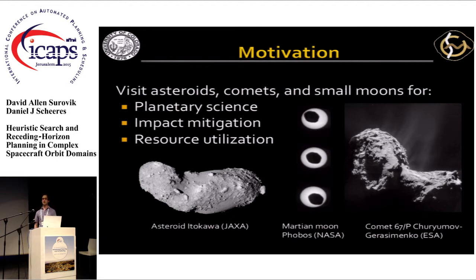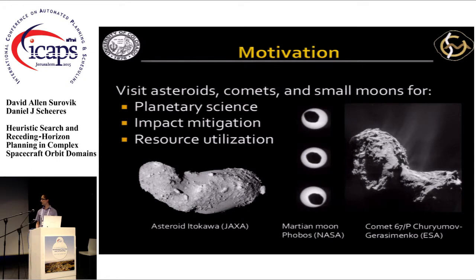Some examples here are the asteroid Itokawa, which was visited by the Hayabusa spacecraft from the Japanese Space Exploration Agency several years back. You can see it's very irregular, as asteroids are. The Martian moon Phobos has also been a target for several proposed missions, and here you see it silhouetted against the sun as viewed from one of the Mars rovers.